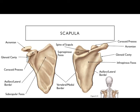There are several features to know on the scapula. The glenoid cavity is formed by two large processes: the more posterior one is the acromion, and the more anterior one is the coracoid process. Following the acromion back, you see a long ridge along the posterior side of the scapula called the spine of the scapula, which continues forward to form the acromion.